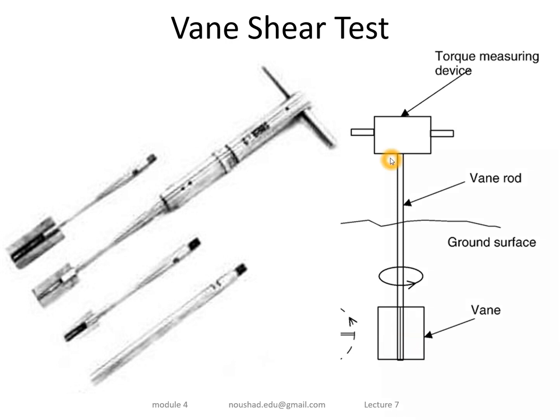We rotate the handle, and as the vane is inserted and penetrates the soil, it applies resistance through the soil. This resistance leads to a shear failure in the soil. We record the maximum torque required to cause this shear failure.